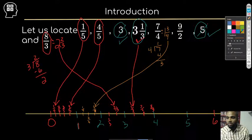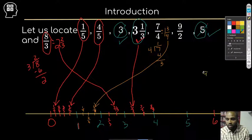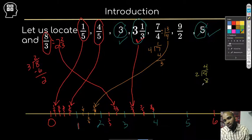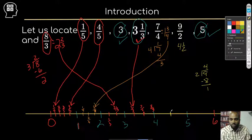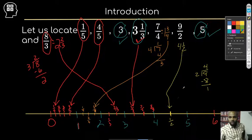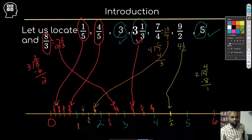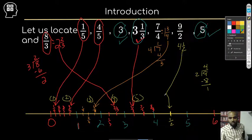My last one is nine over two. Nine divided by two: two goes into nine four times, giving eight, remainder one. So that's four and one half. I'm going to break the space between four and five into halves, and that's pretty easy — it's right in the middle. And that's how you put those in order. Once they're all plotted, you just go from left to right: one, two, three, and so on.